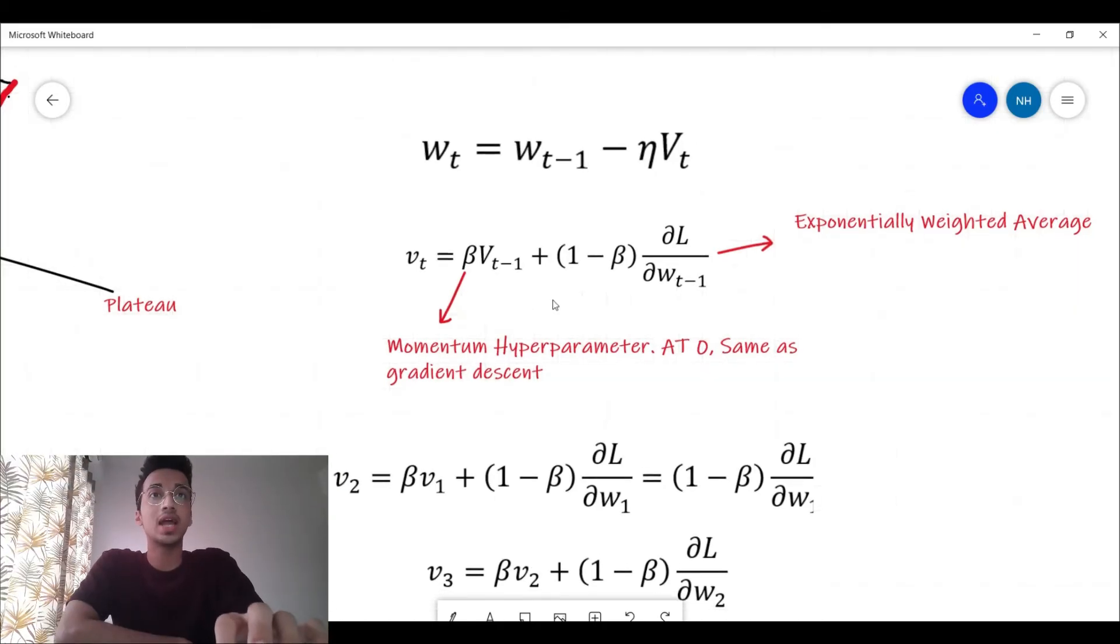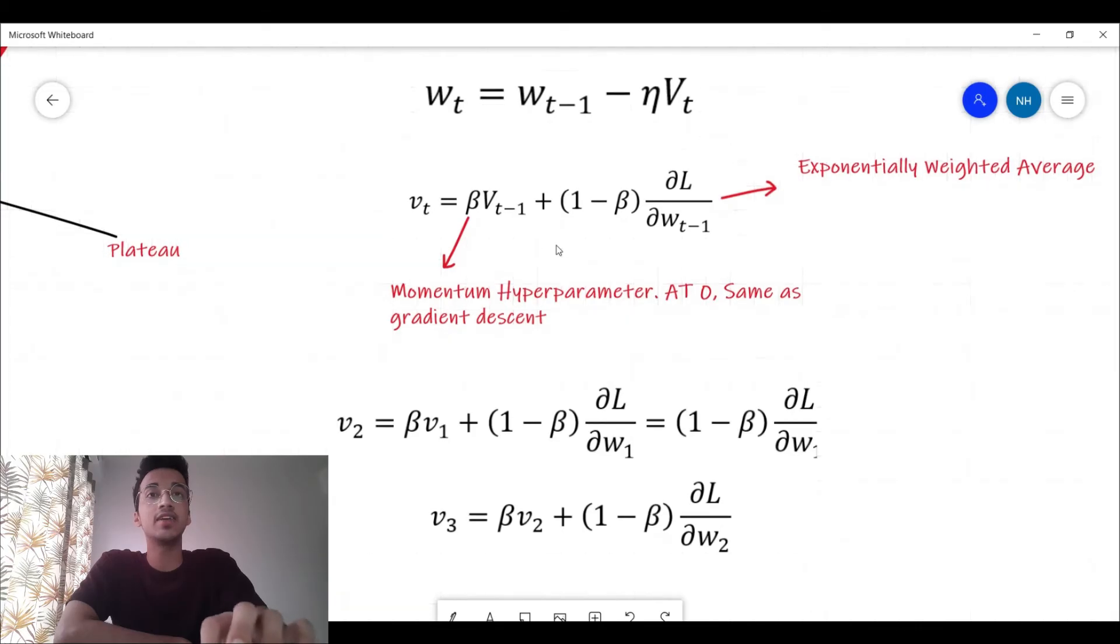Let's look at how it actually works in practice. Let me take v_2. Initially v_1 is going to be kept as 0. The next v_2 is going to be according to this equation: β into v_1 plus (1 - β) into the change of loss with respect to the change in the first weight. It can be written as this because v_1 is equal to 0 initially.